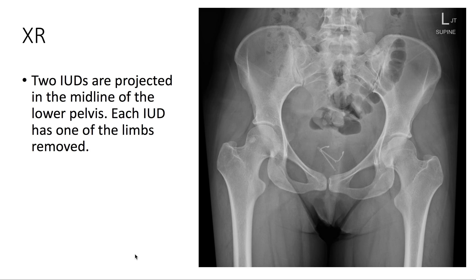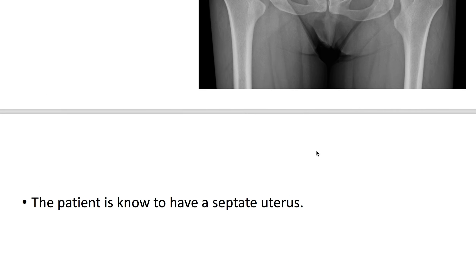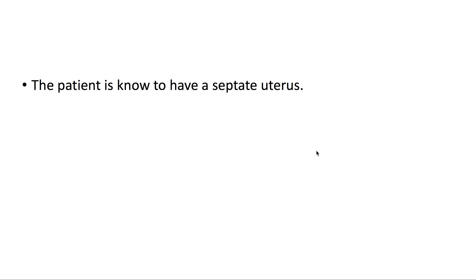Here on x-ray, we see two IUDs projected in the midline of the lower pelvis. Each IUD has one of the limbs removed. The patient is known to have a septate uterus.